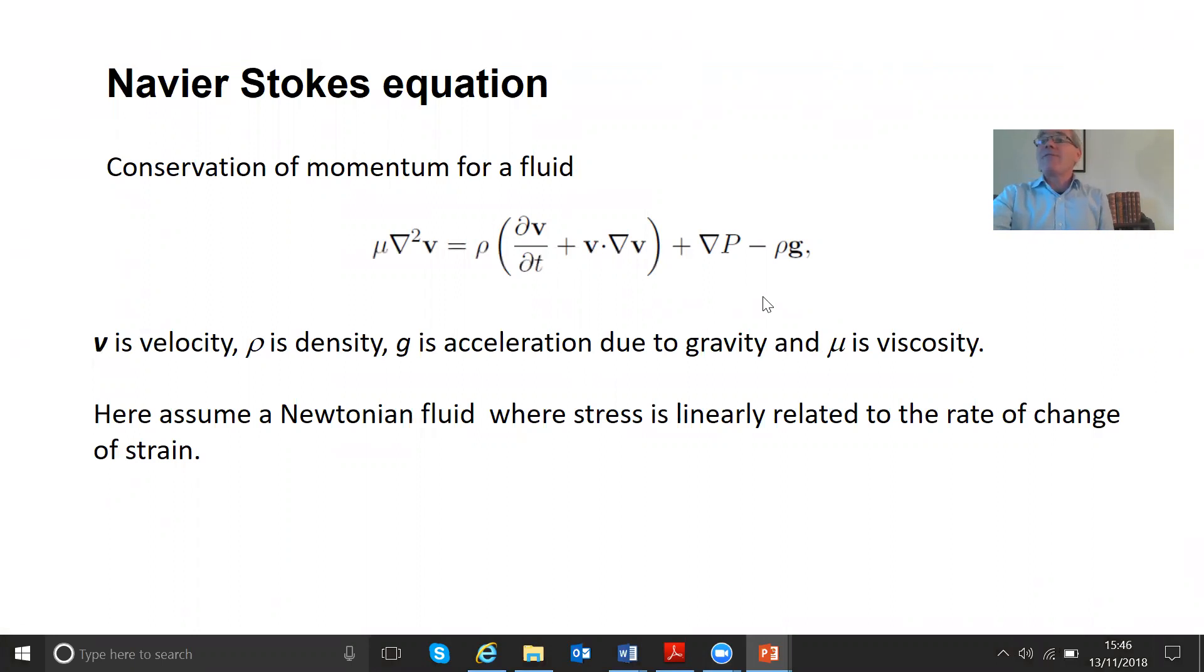So let's do this F equals ma. What's the F term? This is the force on the fluid. It's a pressure, in fact pressure gradient. Flow goes from high to low pressure. It's driven by a pressure gradient, and the rho g term is the force due to gravity.